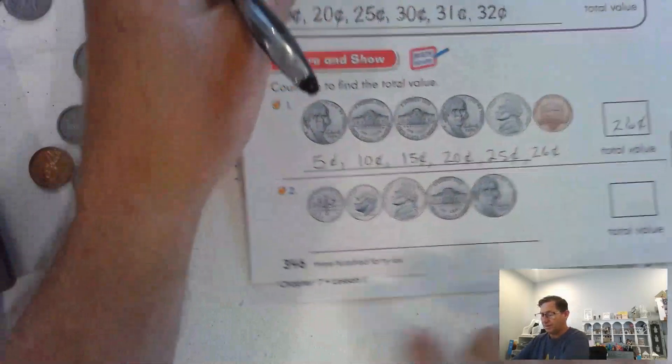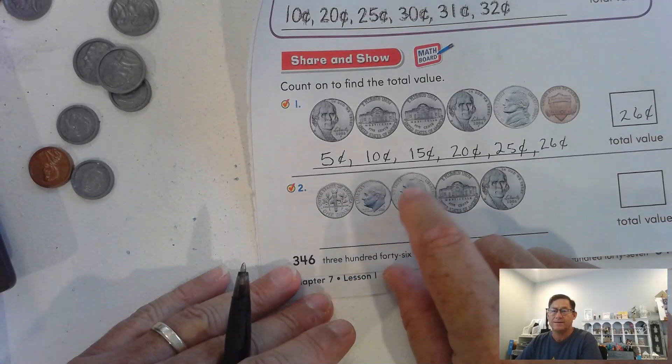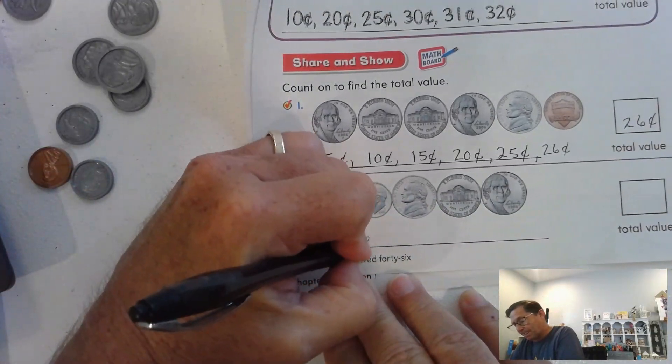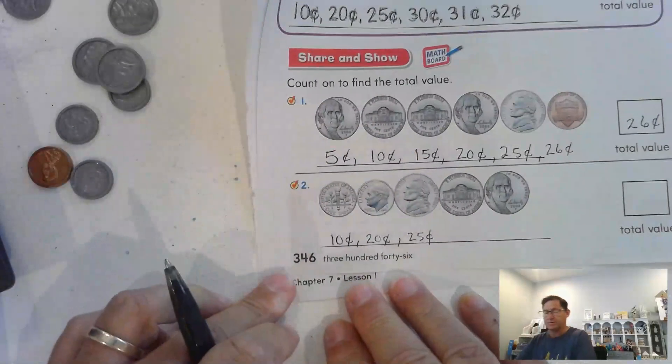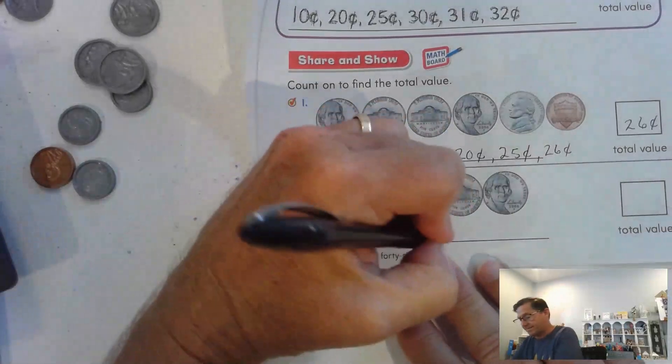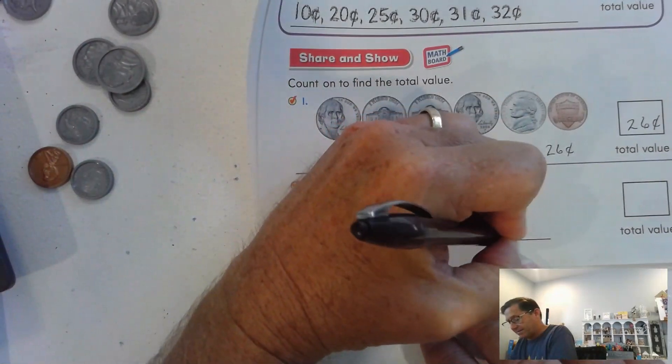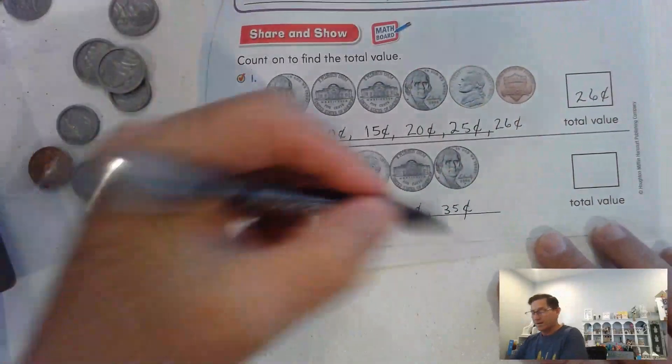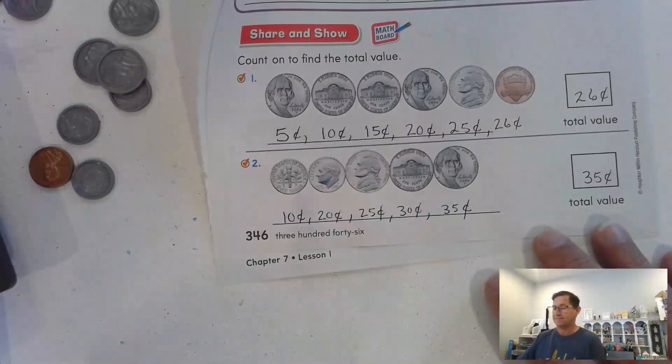Let's count number two. We have dimes and nickels. We're going to start with the dimes because they're worth 10 and the nickels are worth only five. So 10 cents, 20 cents, 25, 30, 35 cents. We need to be able to count by tens and fives. These coins add up to 35 cents. This was page 347.